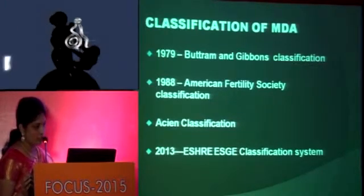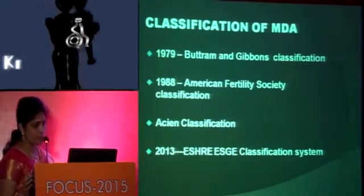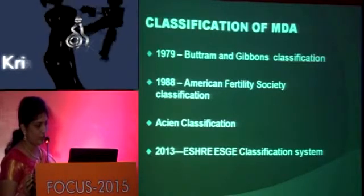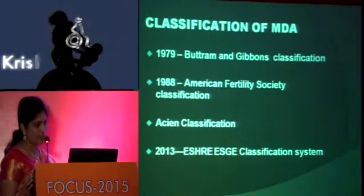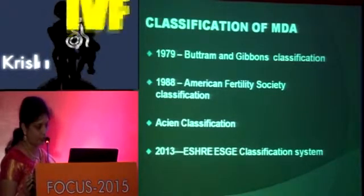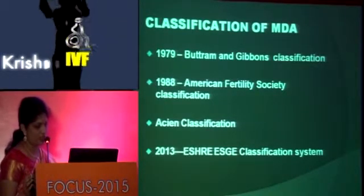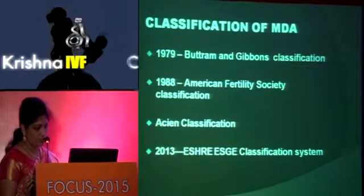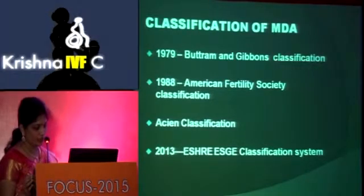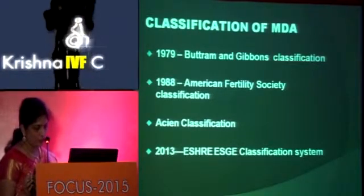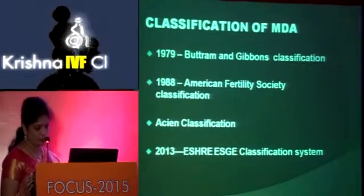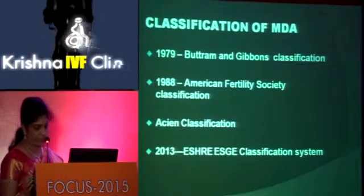Key classification systems include: the 1979 Buttram and Gibbons classification, the 1988 American Fertility Society classification, the ACOG classification, and the 2013 European Society of Human Reproduction and Embryology (ESHRE) classification system.